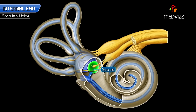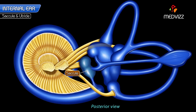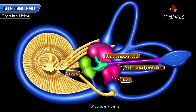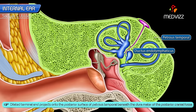The saccule is a small globular membranous sac which lies in the anteroinferior part of the vestibule. The utricle is an oblong membranous sac, larger than the saccule, and lies in the posterior superior part of the vestibule. The saccule is connected anteriorly to the basal turn of the cochlear duct by the ductus reuniens and posteriorly with the utricle by a Y-shaped utriculosaccular duct. The vertical limb of the Y continues as the endolymphatic duct or ductus endolymphaticus, whose dilated blind terminal end is called the saccus endolymphaticus. The endolymphatic duct passes through the aqueduct of the vestibule in the posterior part of the petrous temporal, and its dilated terminal end projects onto the posterior surface of the petrous temporal beneath the dura mater of the posterior cranial fossa.